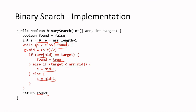Inside the loop: compare the value at arr[mid] with the target. If equal, found = true. If arr[mid] is smaller, update s to mid + 1. Otherwise update e to mid - 1. In the end, return found. When found becomes true, the while condition fails and you exit the loop — that's why there are only three lines: if, else if, and else.